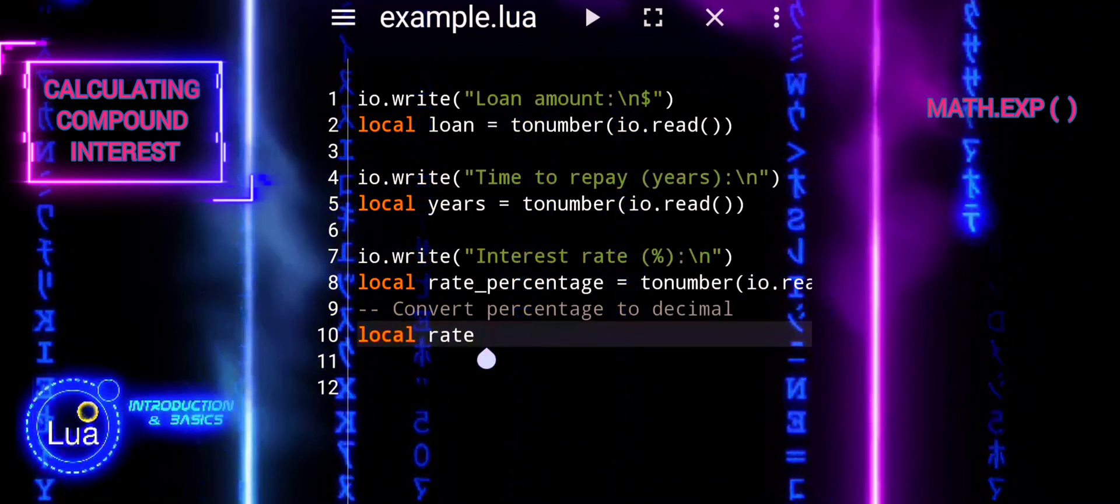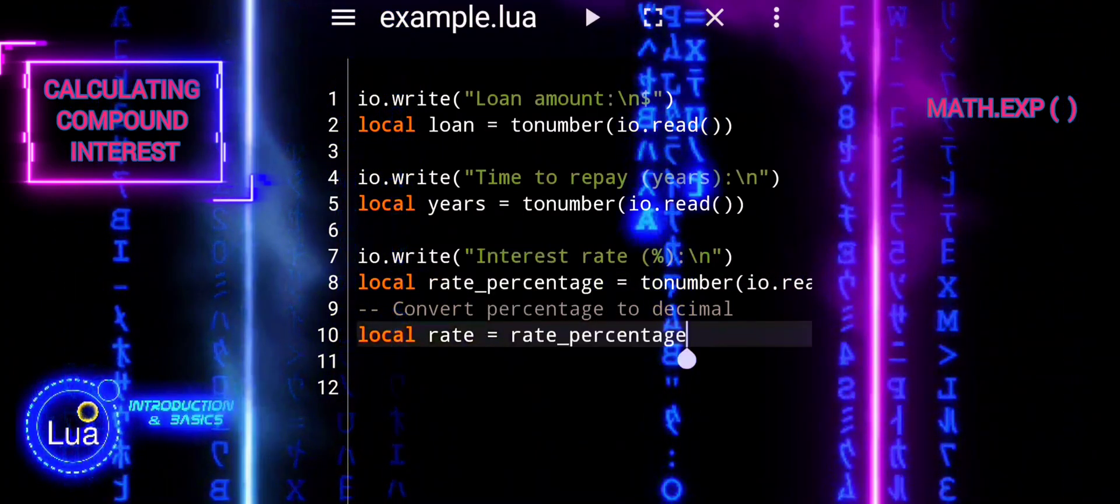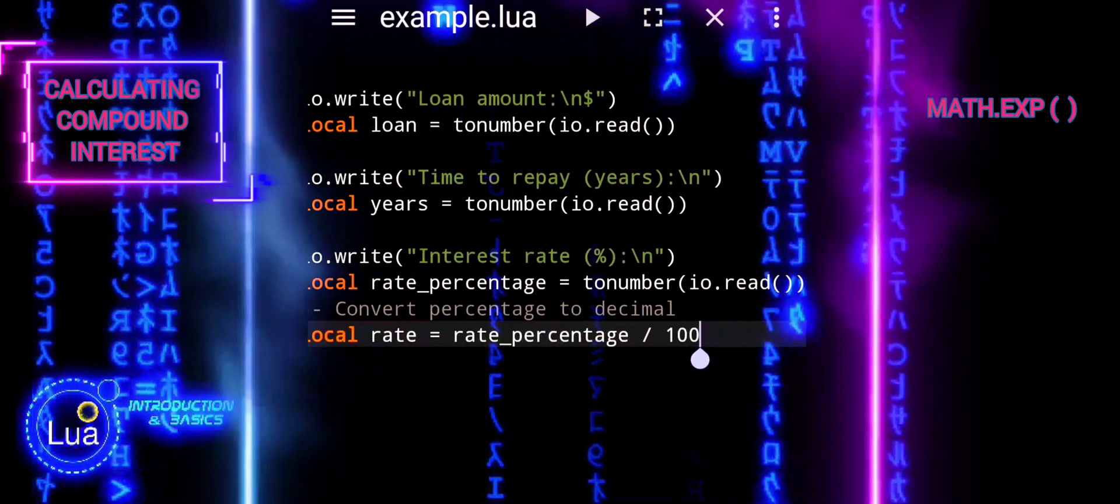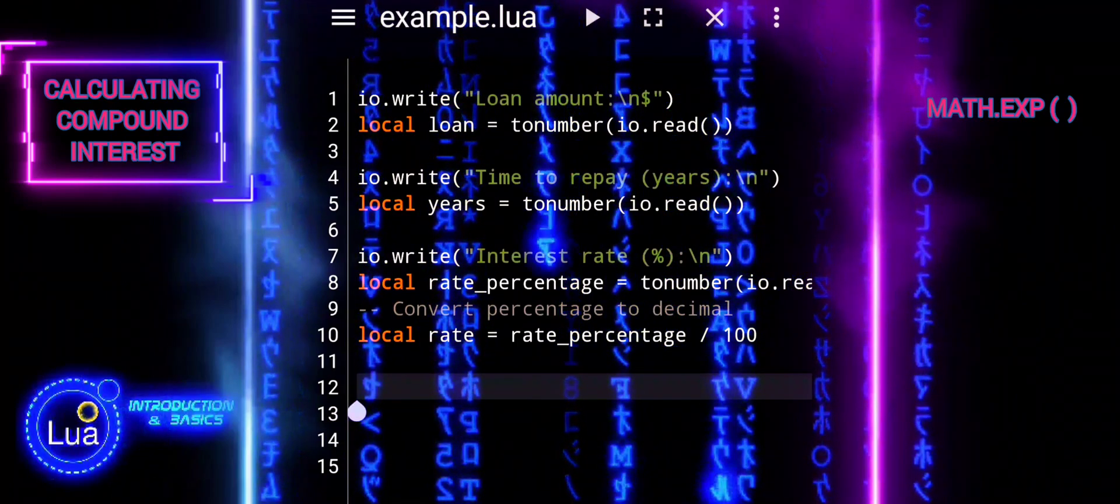Here rate_percentage is converted from a percentage format to a decimal format. This conversion is achieved by dividing the rate_percentage by 100, resulting in a decimal representation of the interest rate, which is then stored in the variable rate.